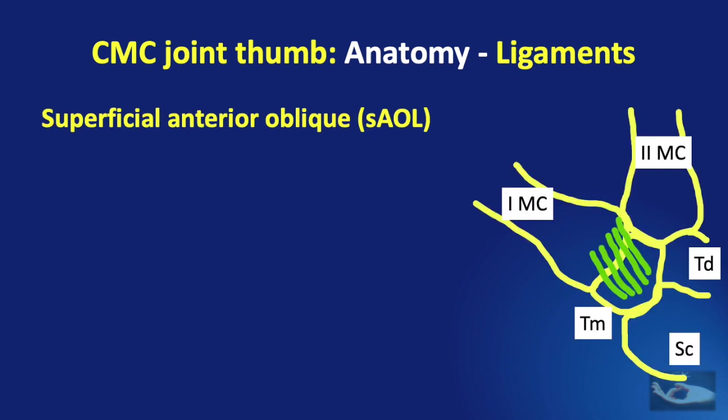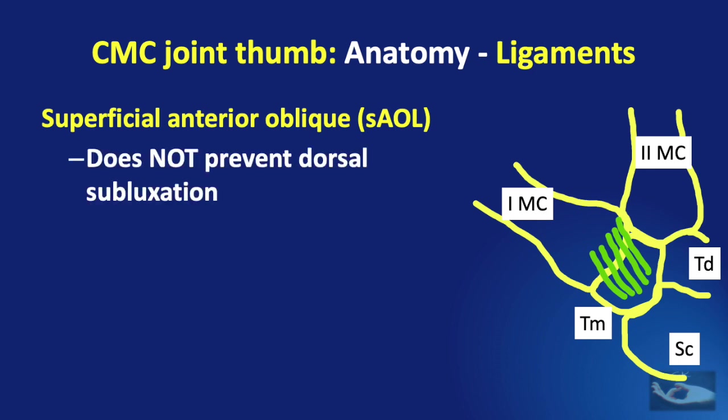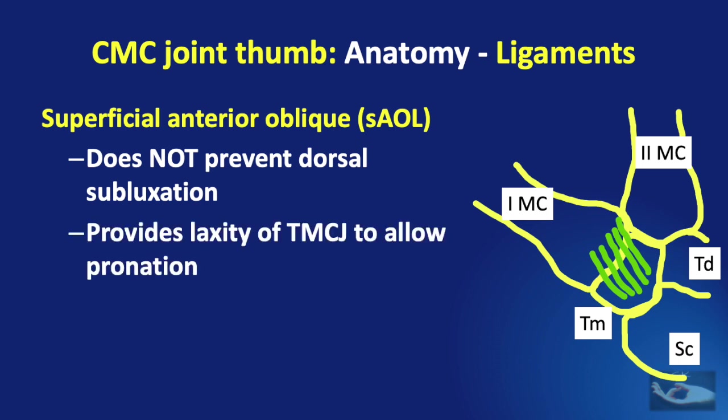The superficial anterior oblique ligament does not stabilize the joint in flexion and does not prevent dorsal subluxation. It only provides laxity of the trapezio-metacarpal joint to allow pronation and forms a voluminous pouch to accommodate the moving metacarpal base.